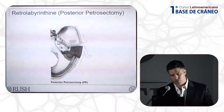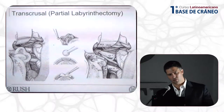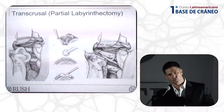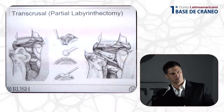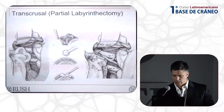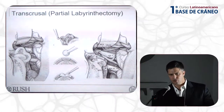The trans-crucial approach, otherwise known as partial labyrinthectomy, can be done as part of a petrosal approach to gain additional exposure to the cerebellopontine angle. It's interesting that you can preserve hearing in approximately 60% of patients with this approach.